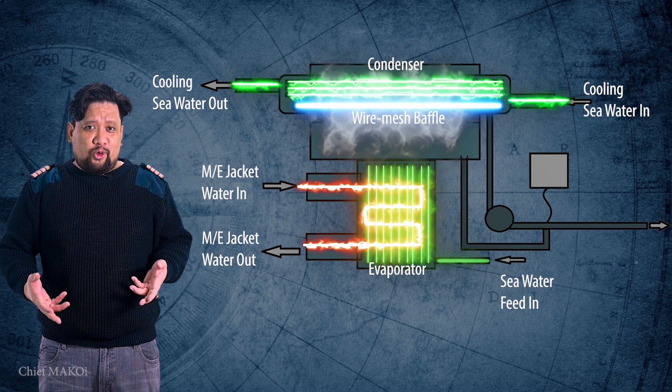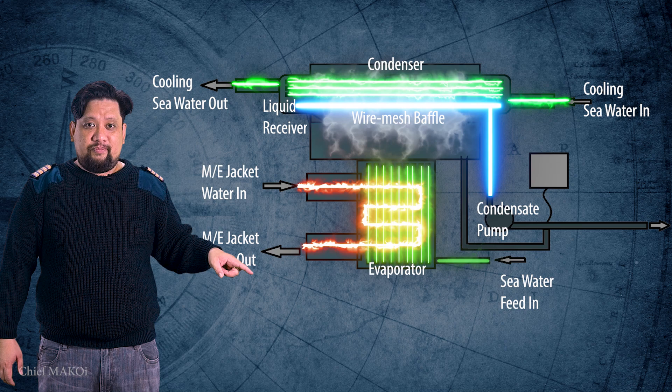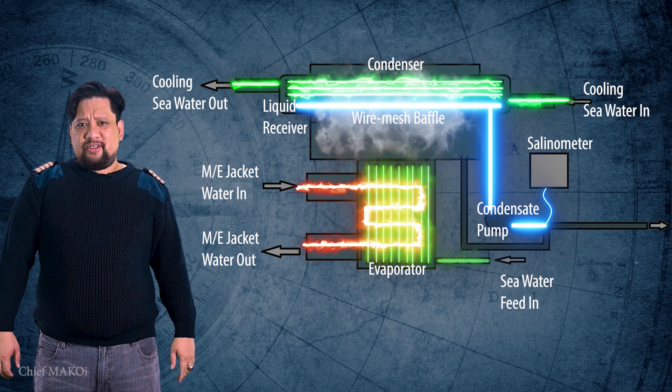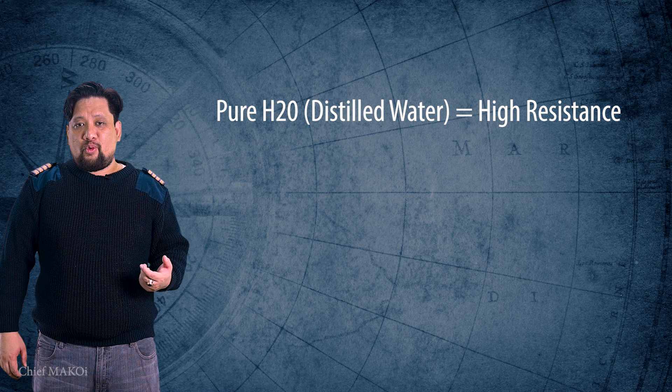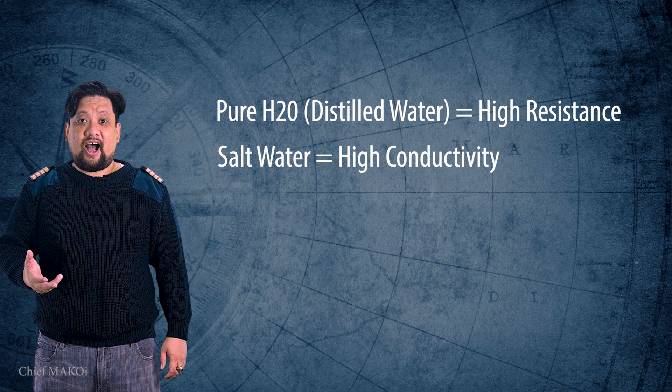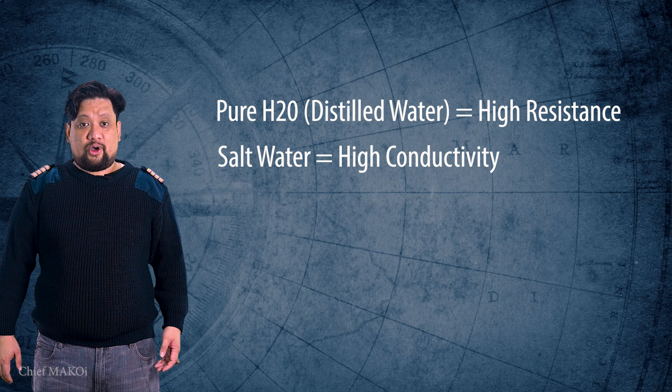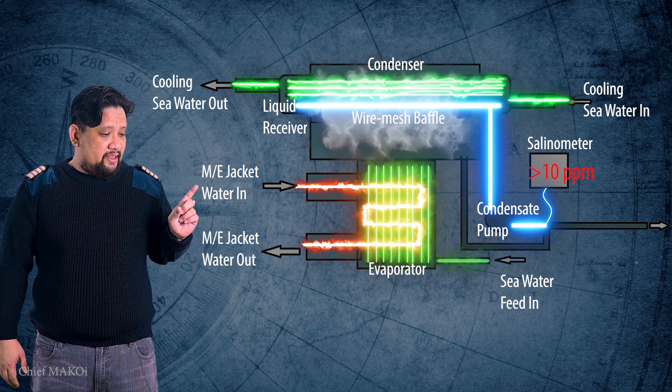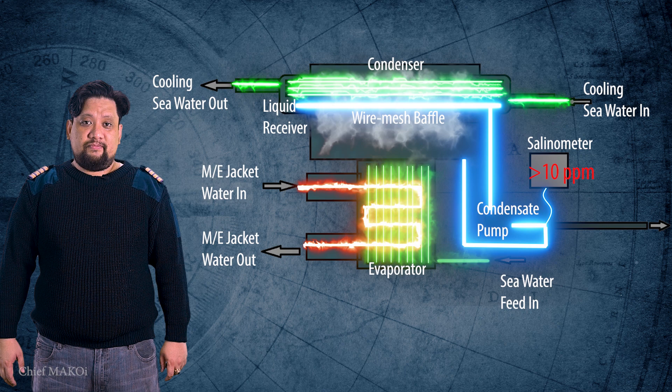The fresh water will be sampled and analyzed by the salinometer. The salinometer is a device which determines water purity in terms of absence of salt by measuring electrical conductivity. The concept is that pure water has a high resistance to electrical flow, as compared to salt water which has a high electrical conductivity. Therefore, the higher the current flow means more salt content. If the measured salinity is above 10 ppm, a magnetic valve activates and diverts the flow of fresh water back into the evaporator. If the water salinity is below 10 ppm, it is delivered into the ship's freshwater storage tanks.